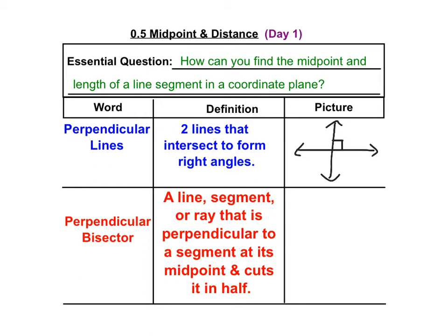A perpendicular bisector is a line, segment, or ray that is perpendicular to a segment at its midpoint and cuts it in half. So for perpendicular bisector, we need a few different criteria to be met.